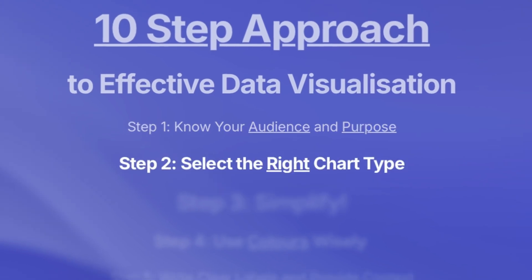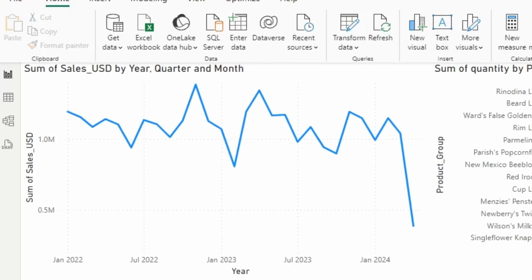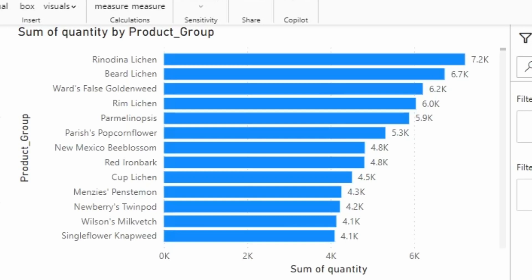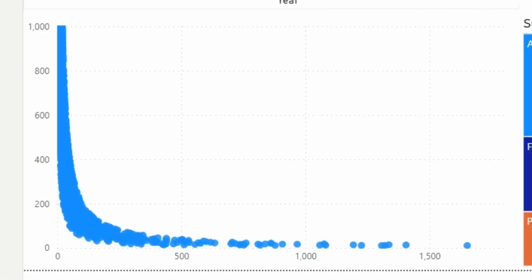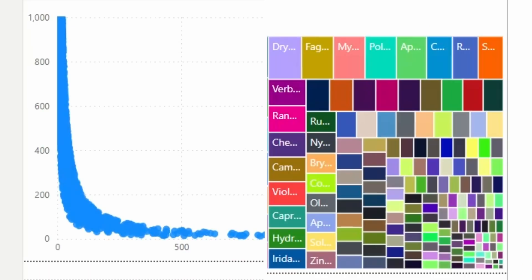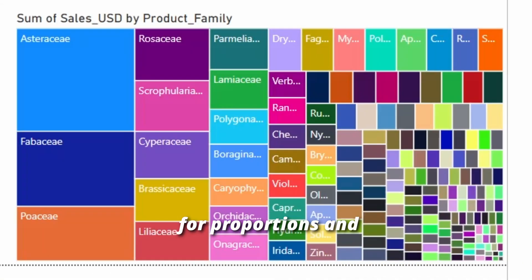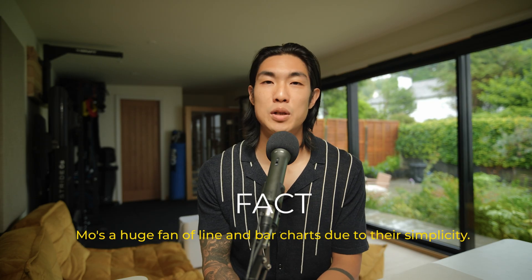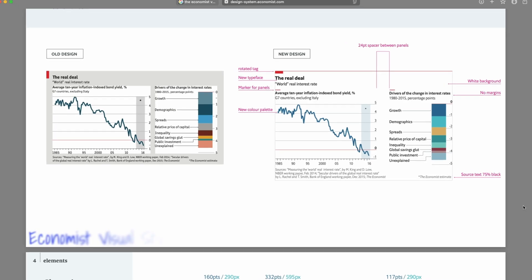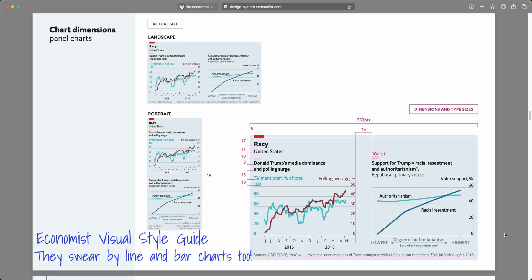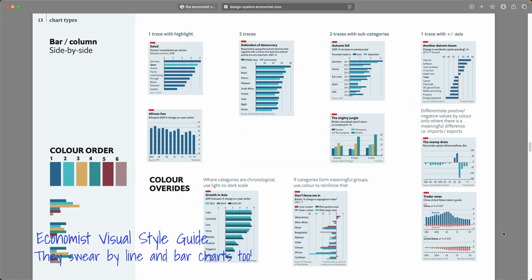Step two: select the right chart type. This one seems like a no-brainer, but what's blatantly obvious is sometimes what is probably the easiest to miss or do wrong. Use line charts for trends over time, bar charts for comparing categories and quantities, scatter plots for relationships between variables, and tree maps or bubble charts for proportions and multi-variable comparisons. I'm a big fan of line and bar charts due to their simplicity, so I only really use other chart types if I'm trying to visualize something super complex.